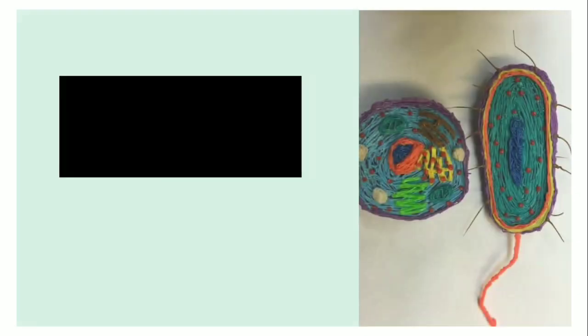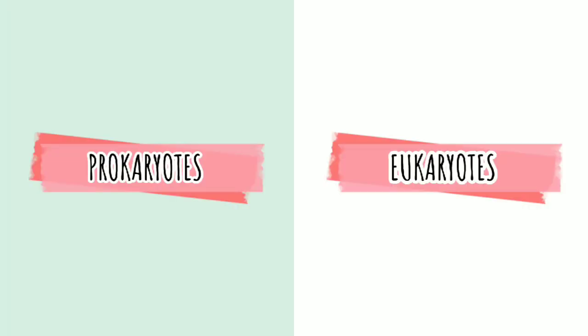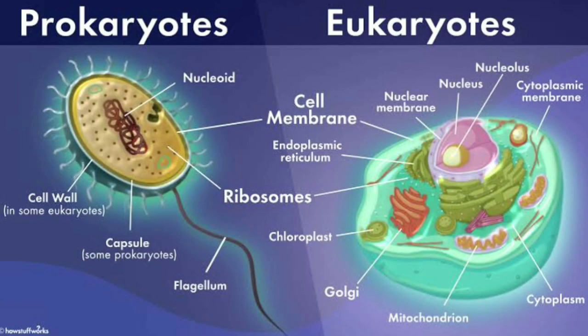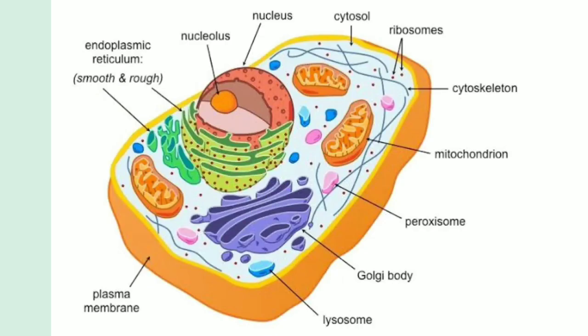There are two kinds of organisms according to their cell structure: the prokaryotes and eukaryotes. The difference between prokaryotic and eukaryotic organisms is said to be the most important distinction among the groups of living things.